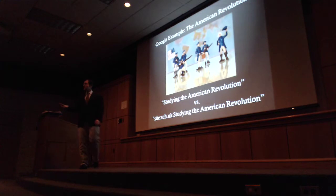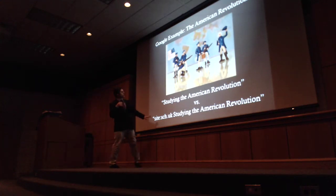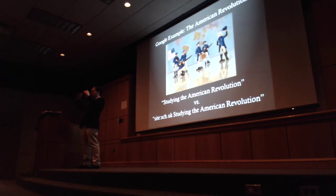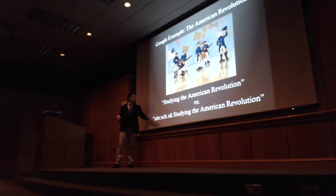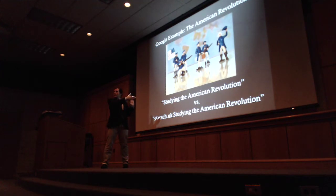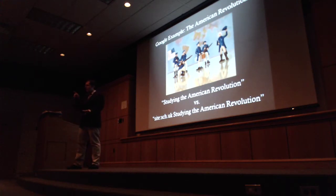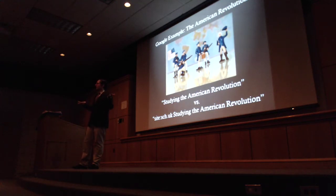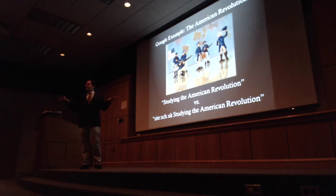A legitimate example you can use for picking through history: let's talk about the American Revolution. If you enter 'studying the American Revolution' in Google, you're going to get an American-centric view. But if you type 'site:.uk' and then 'studying the American Revolution,' you're going to get search results from the British perspective. You can do that for anything tied to geography. Have your students look at both outside of class or at the beginning of class, put them in groups, and ask: how are these similar? How are they different? Why is that so, and what makes that important to you?